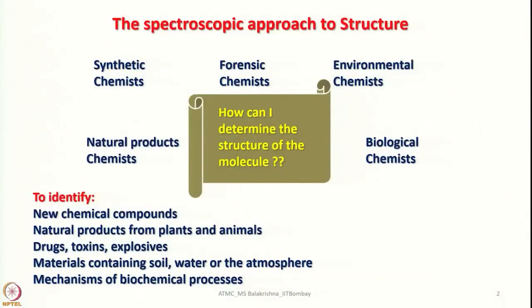For characterization we have to use analytical instruments as well as spectroscopic instruments. So let us start with UV-visible spectroscopy, but before that I shall give a little introduction to the methods of characterization and spectroscopic methods at our disposal — how to use a spectroscopic approach to understand the structure of a molecule and also its purity.